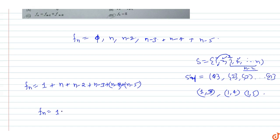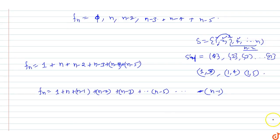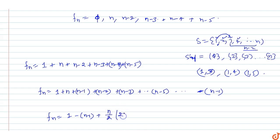So f(n) equals 1 plus n plus (n minus 1) plus ... this is an AP starting from n down to 1, with the two-element subset counts. The sum of the AP part from n minus 2 down has n terms, and we use S = (n/2) × (first term + last term), where first term is n and last is n minus 1, with common difference minus 1.